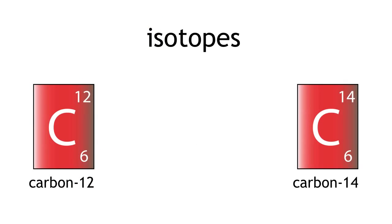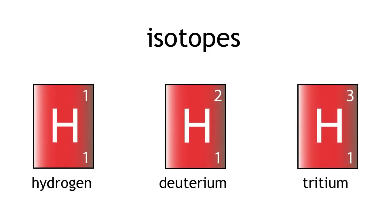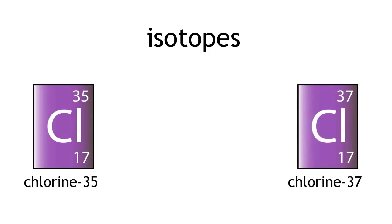Carbon-12 and carbon-14 are not the only examples of isotopes. There are many more such as hydrogen, deuterium, tritium and chlorine-35 and chlorine-37.